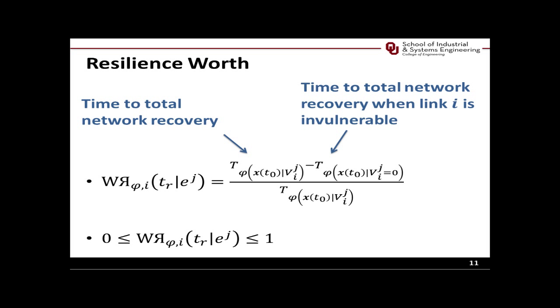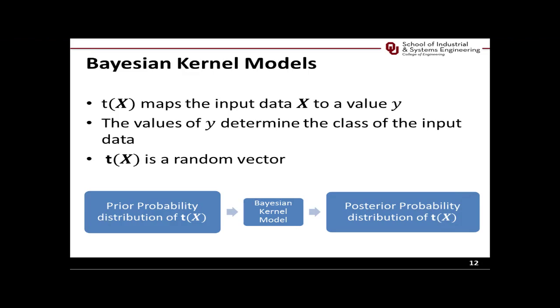Integrating Bayesian methods with kernel methods has recently gained a lot of attention. Bayesian methods use prior data sets in order to estimate posterior probability distributions, while kernel models try to recognize a certain pattern in the data set by mapping this data to a higher dimensional space. The integration of Bayesian and kernel methods allows for a classification algorithm which provides probabilistic outcomes as opposed to deterministic outcomes. That is, rather than assigning a class to a data point, Bayesian kernel methods assign a probability that the data point belongs to a particular class.